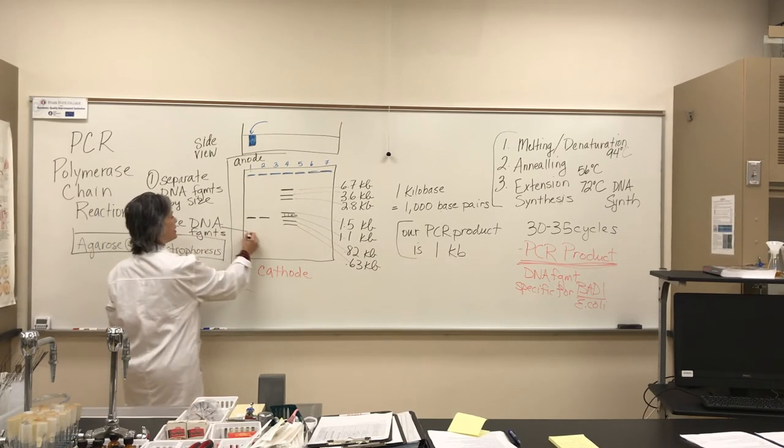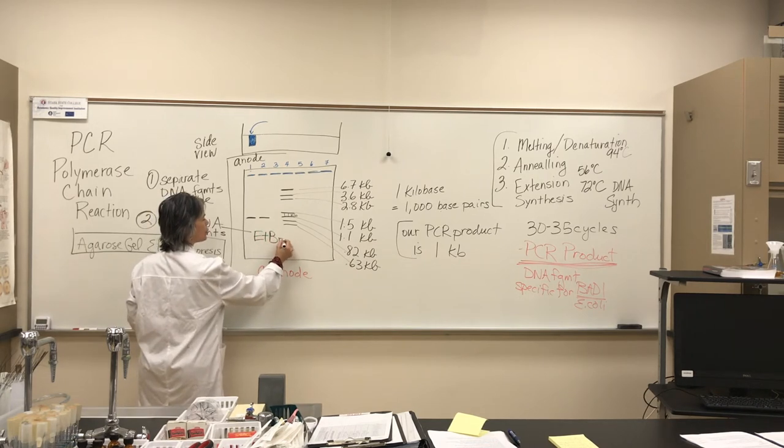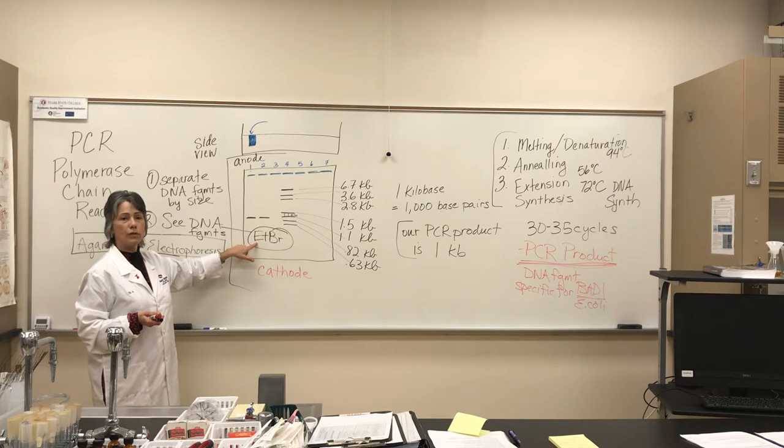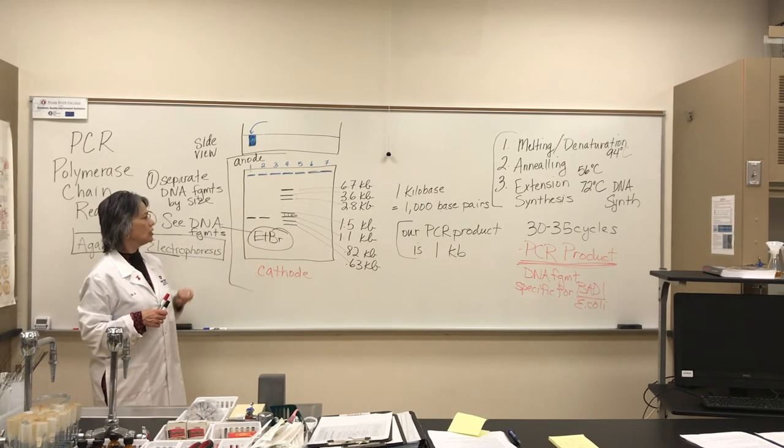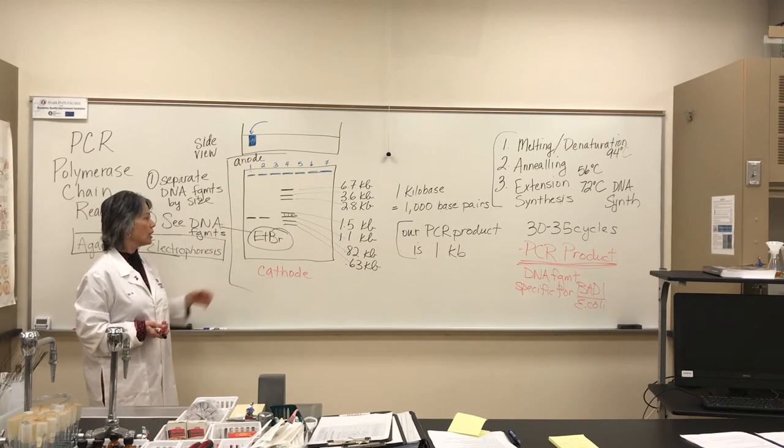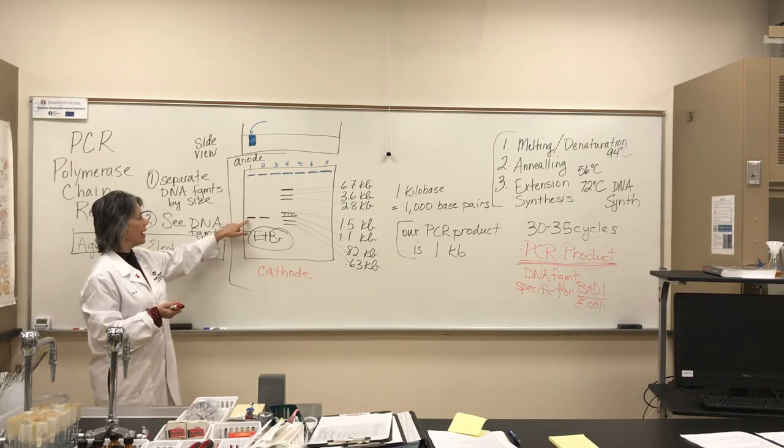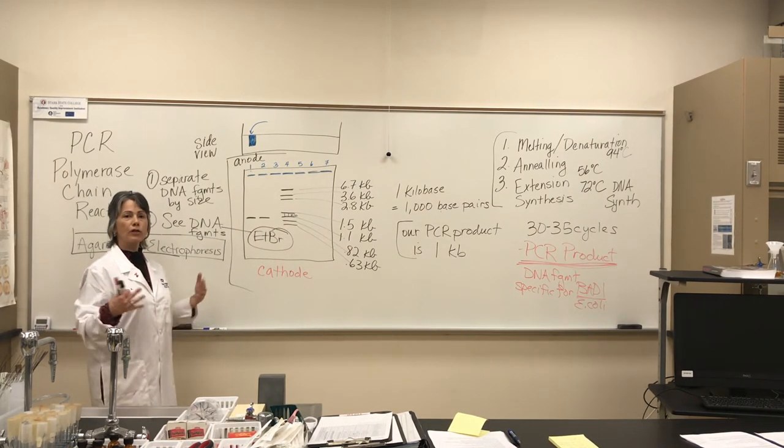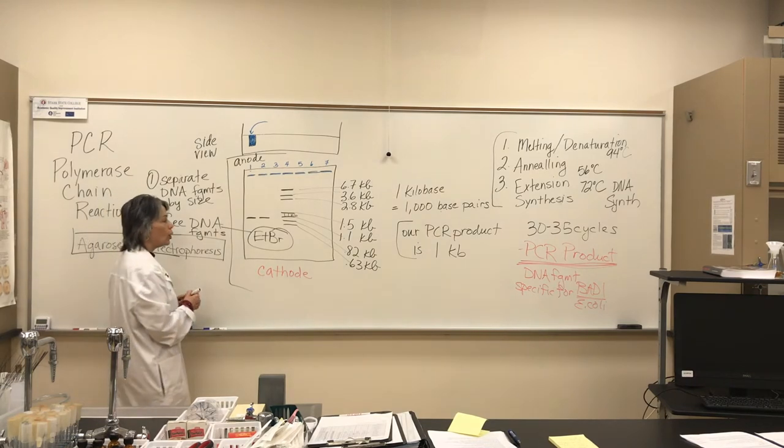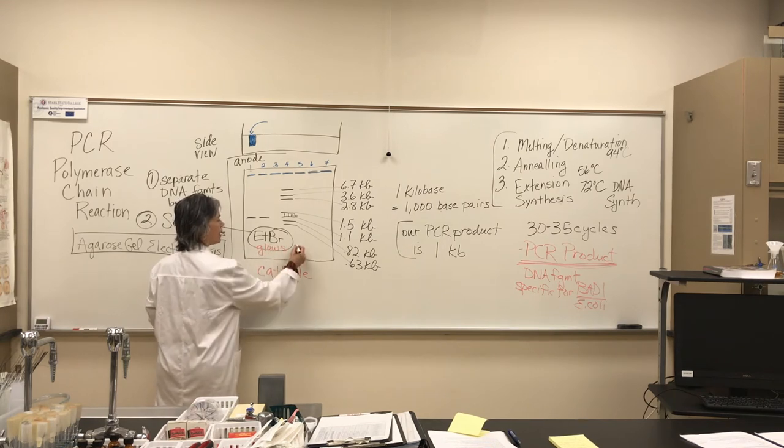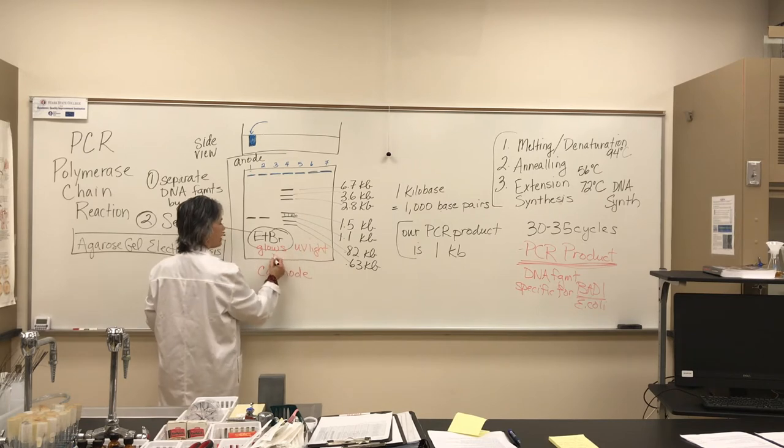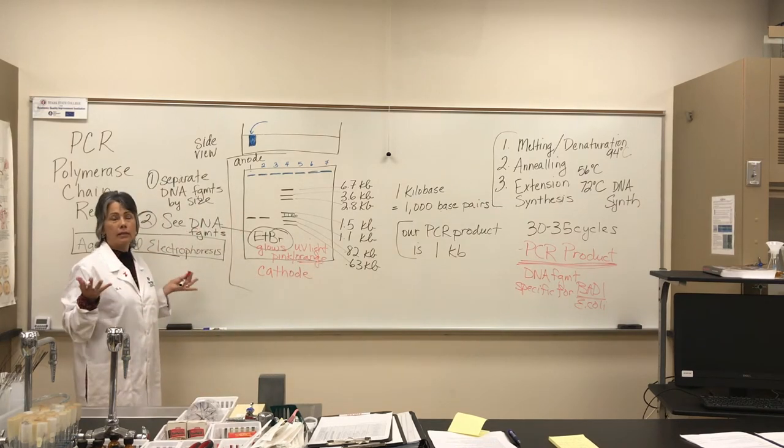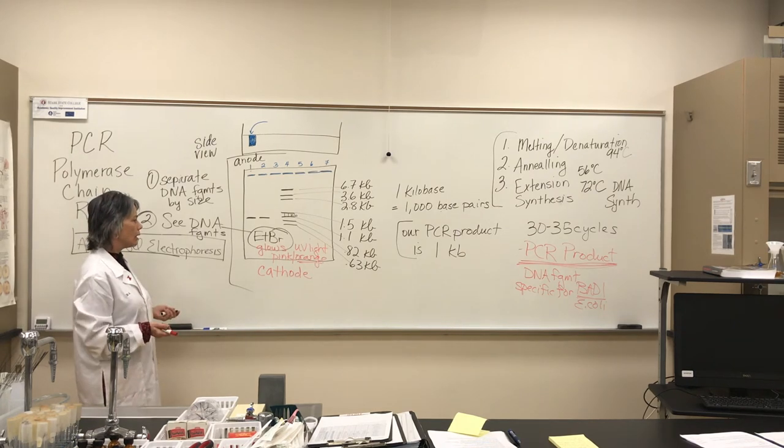So, a step that you're not seeing done was to stain the gel with ethidium bromide. Ethidium bromide is a carcinogen because it likes to bind to DNA molecules. So, only the instructors deal with it. So, the gel that we're going to move to and show you the picture of the results has been stained with ethidium bromide. So, the DNA bands now have the ethidium bromide in there, any DNA bands on the gel. And when we put the gel on the UV light box, turn on the UV lights, ethidium bromide glows. So, you shine UV light on it, and it glows. It's kind of a pink-orange glow. I would say more orange.